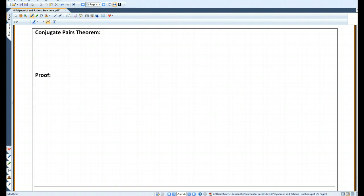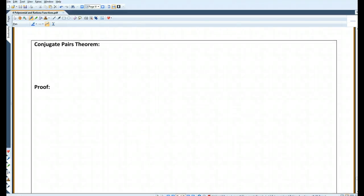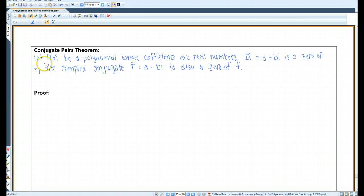The conjugate pairs theorem: Let f of x be a polynomial whose coefficients are real numbers. If r equals a plus bi is a zero of f, the complex conjugate, a minus bi, is also a zero of f.